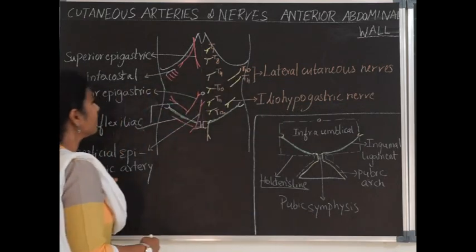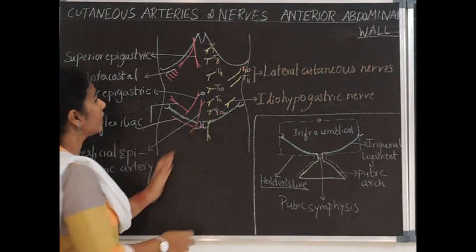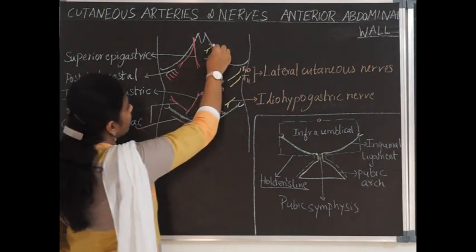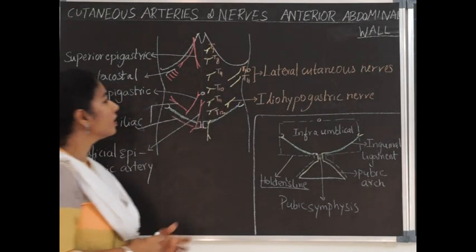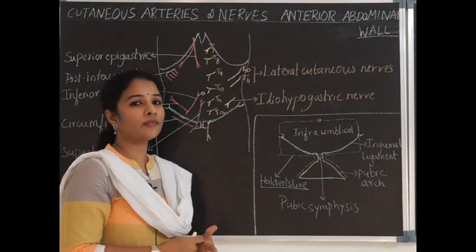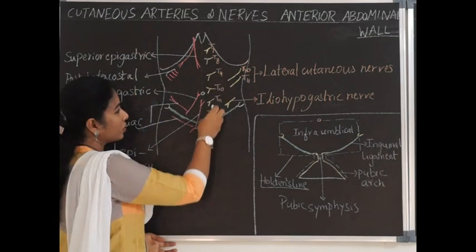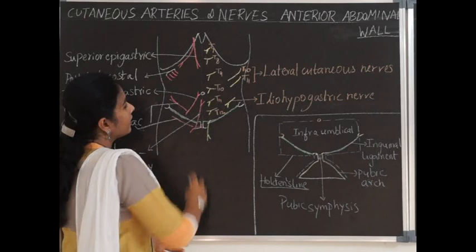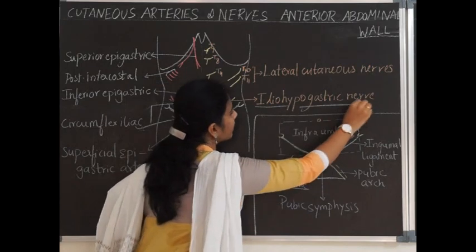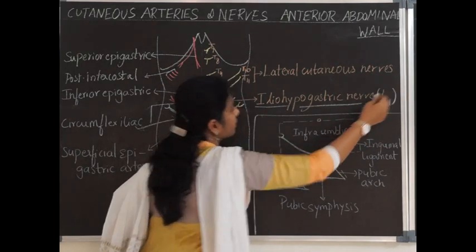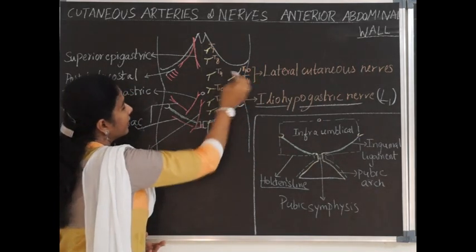The nerve supply to the anterior abdominal wall comes from the lower six thoracic nerves. Of these, the upper five are the intercostal nerves, and the sixth is the subcostal nerve. Below these, the iliohypogastric nerve, derived from L1, supplies the lower abdomen. The lateral aspect is also supplied by T10 and T11.